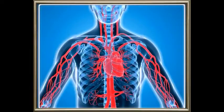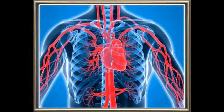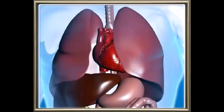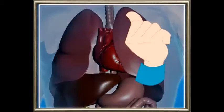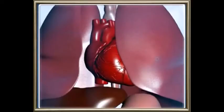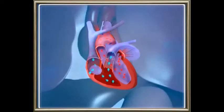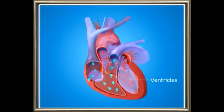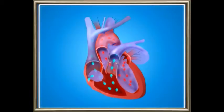In human beings, the heart is built with muscles and is situated in the rib cage between two lungs. It is the size of one's own fist. Its weight is around 300 grams and it is four-chambered. The upper two chambers are called auricles and the lower two are called ventricles.